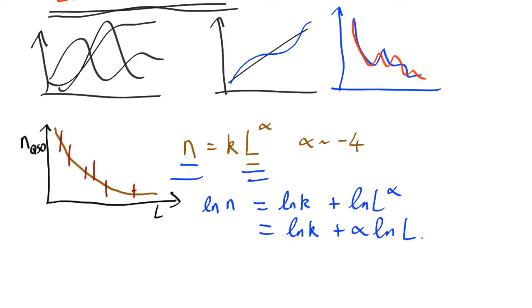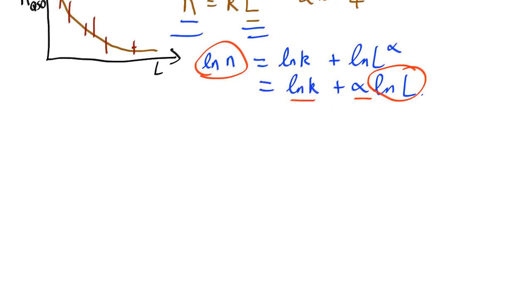So, what this means is if you plot log N against log L, you should have a straight line of slope alpha and intercept K. So, it should look like...